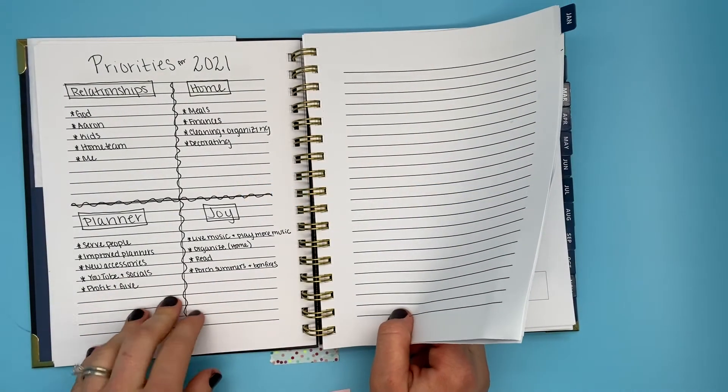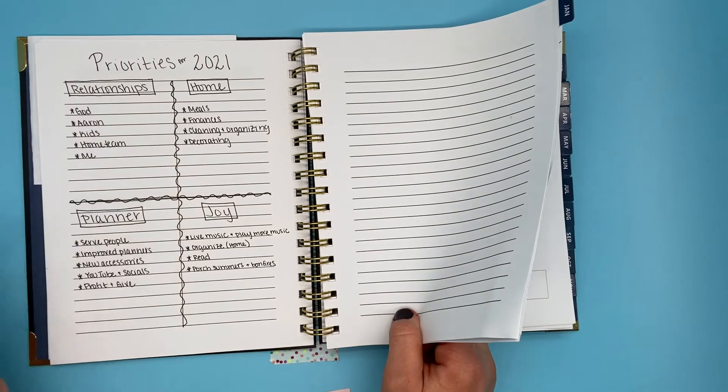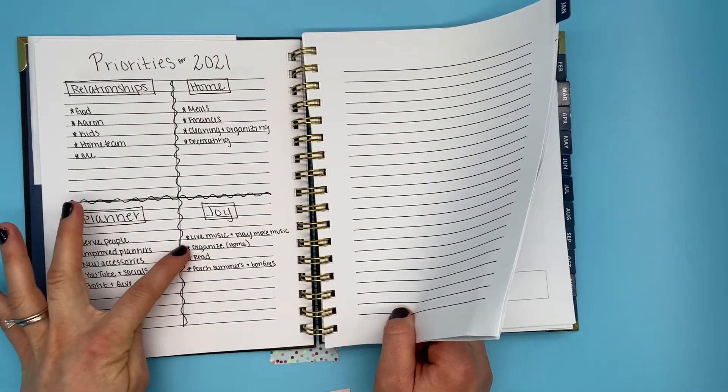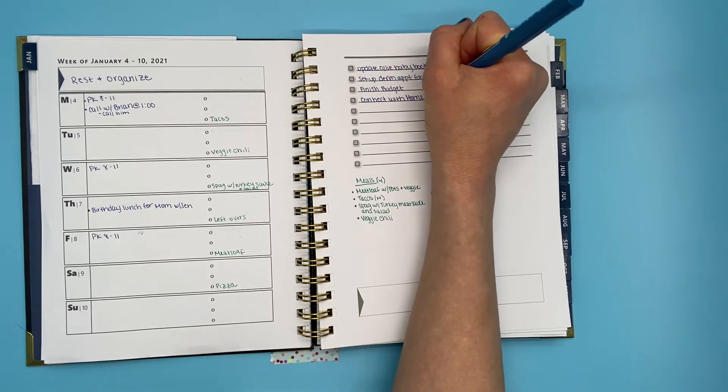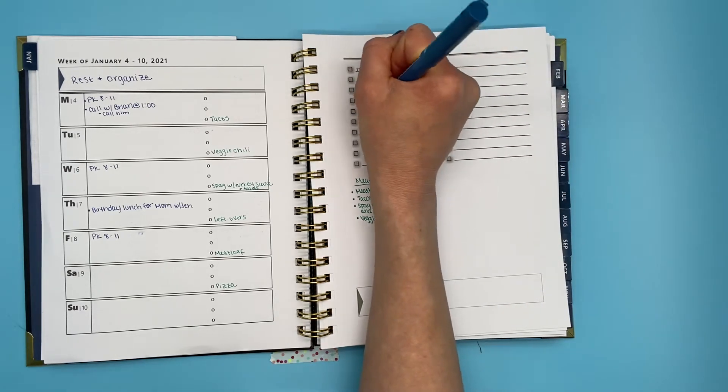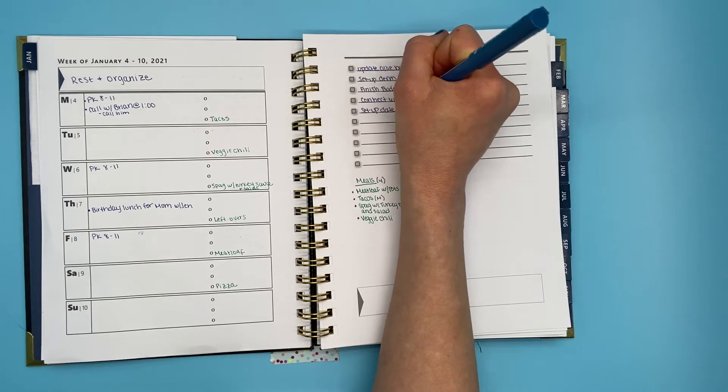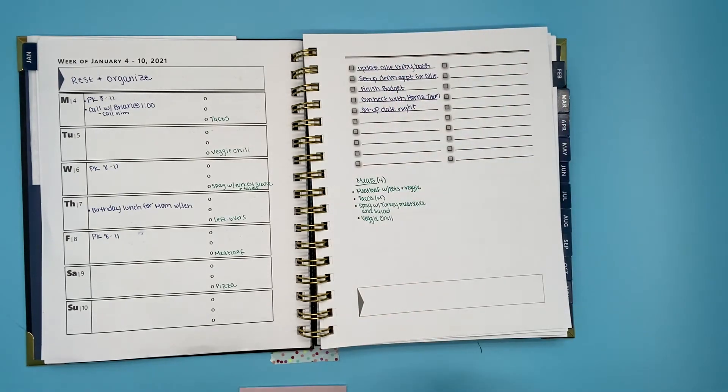Then I double-check my priorities and see what tasks I want to do this week that align with them. Again, since I'm resting this week, I don't put a whole lot on there, but I did want to double-check that and make sure that I am adding some of those onto my to-do list.